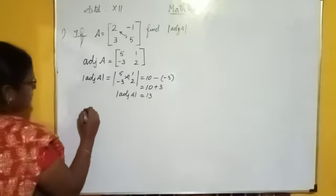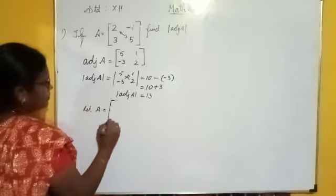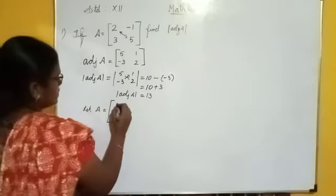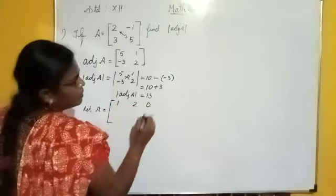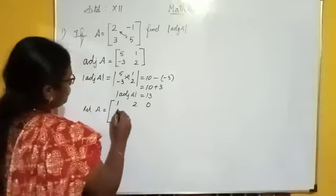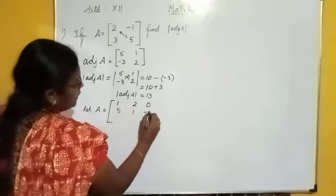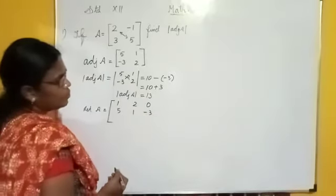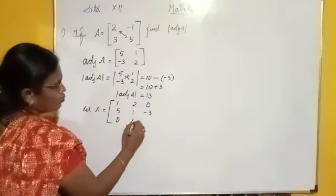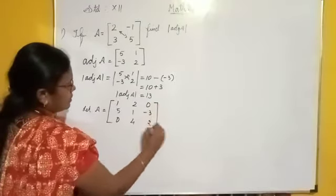For example, let A equal the 3 by 3 matrix: first row is 1, 2, 0; second row is 5, 1, minus 3; and in the third row we can take any numbers: 0, 4, 2.